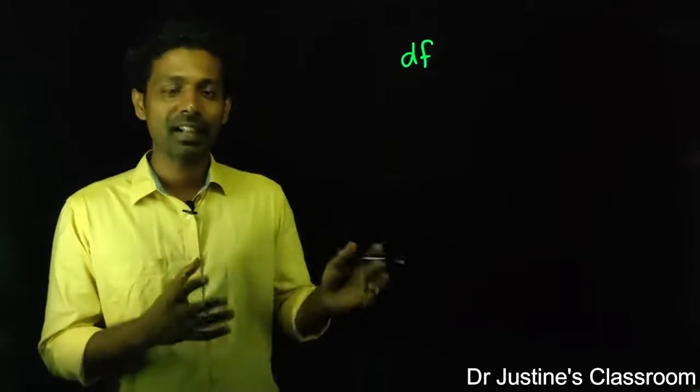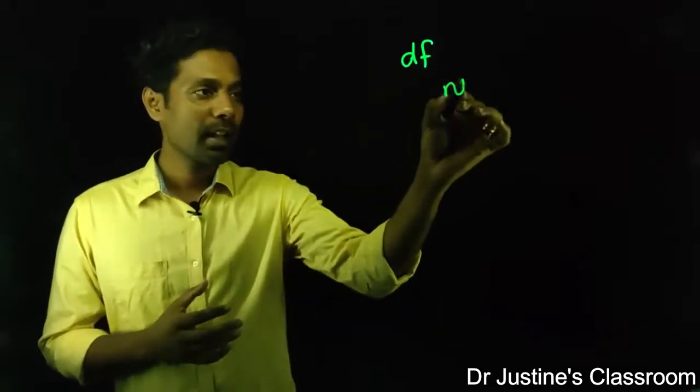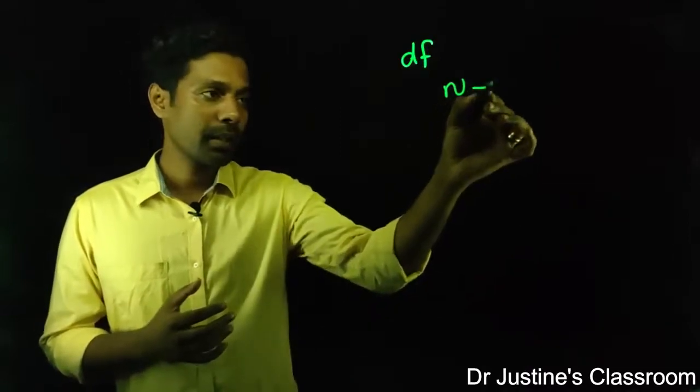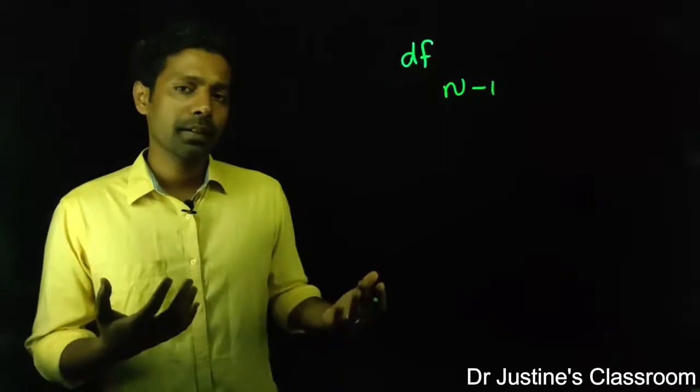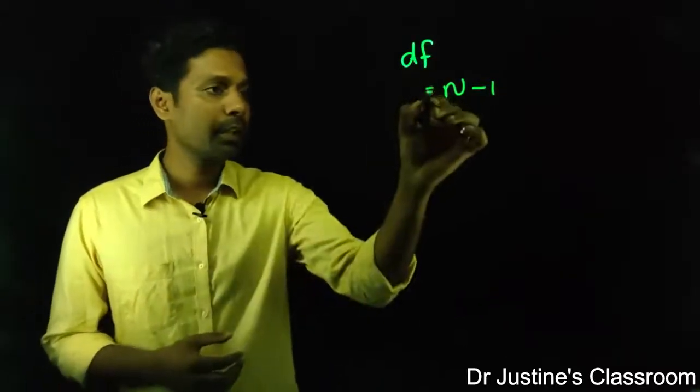Basically, variance is calculated. It is how many independent observations, that is sample size n. What if I have n minus one number of observations on which I have calculated my parameters, let's say variance. So this is degree of freedom.